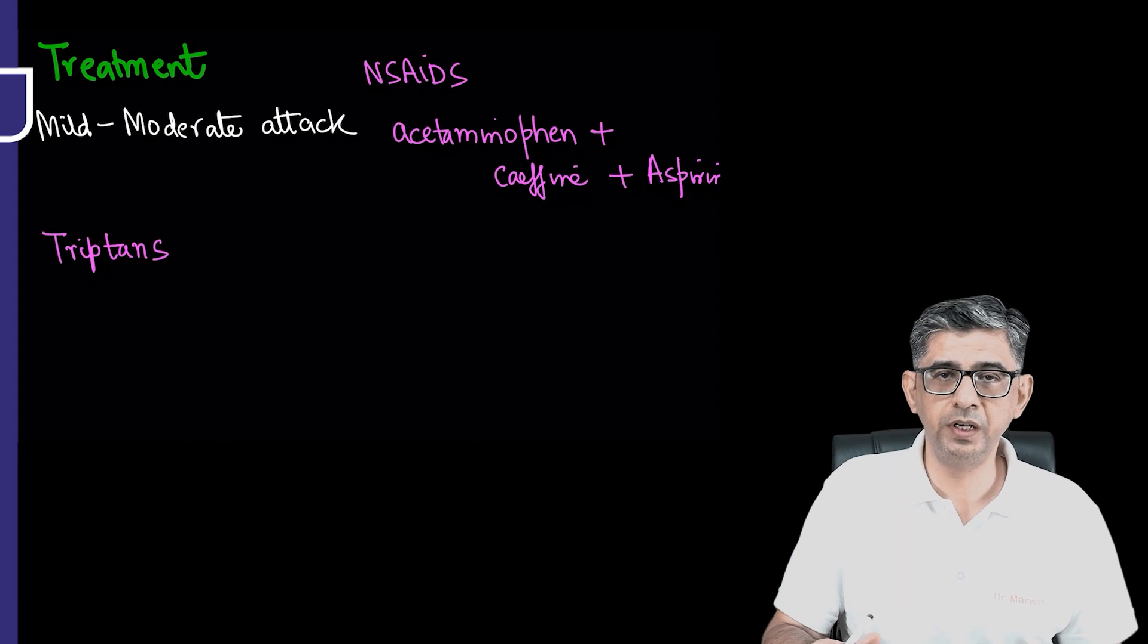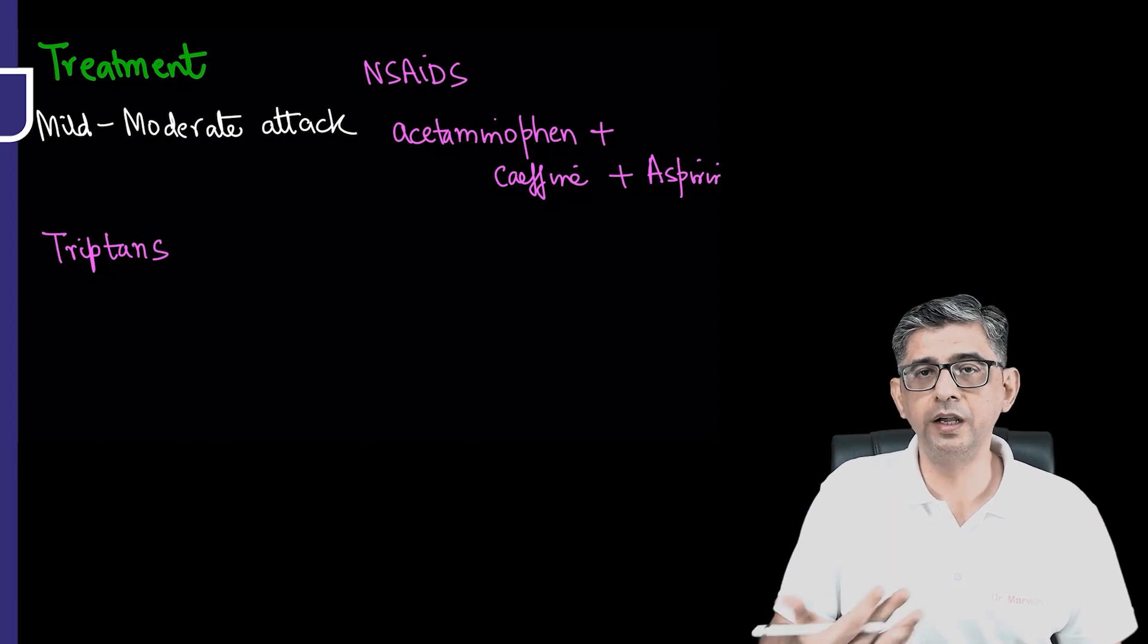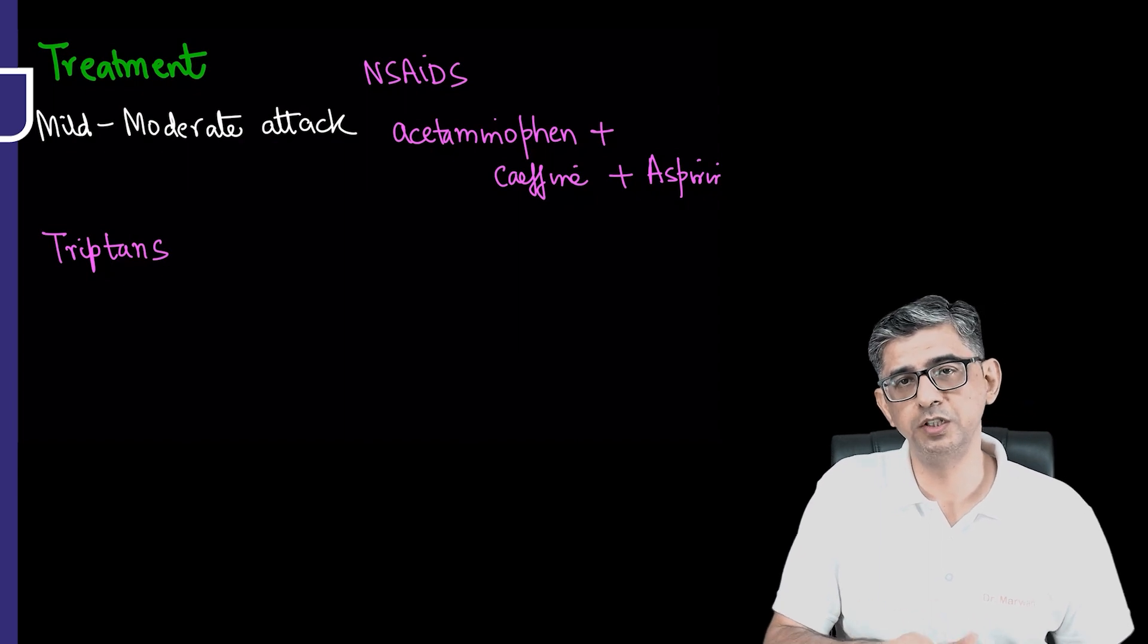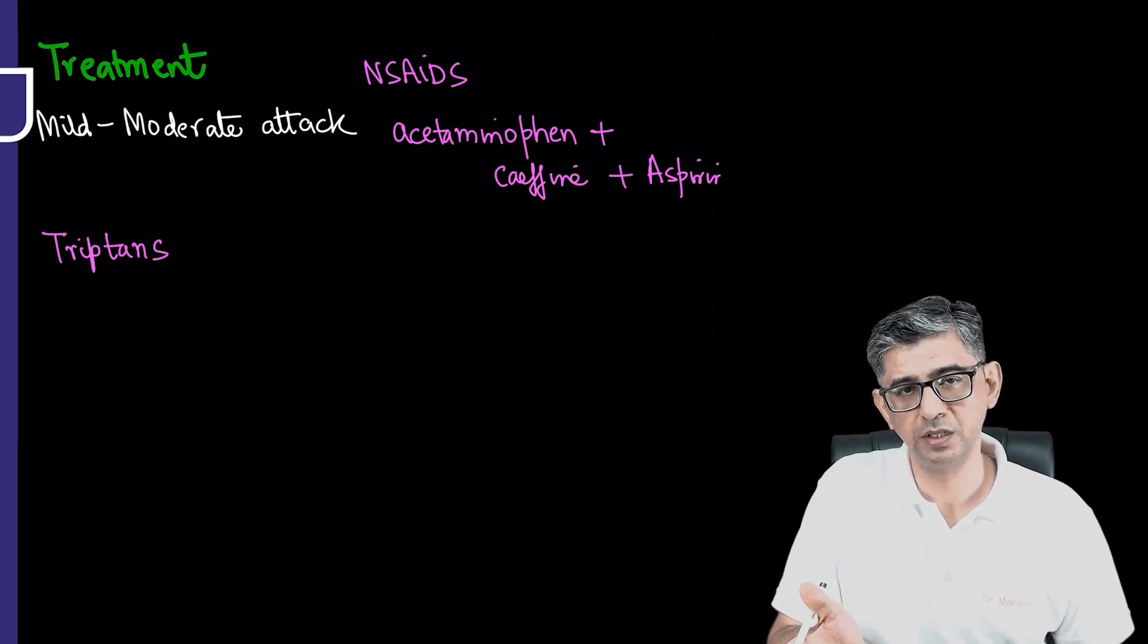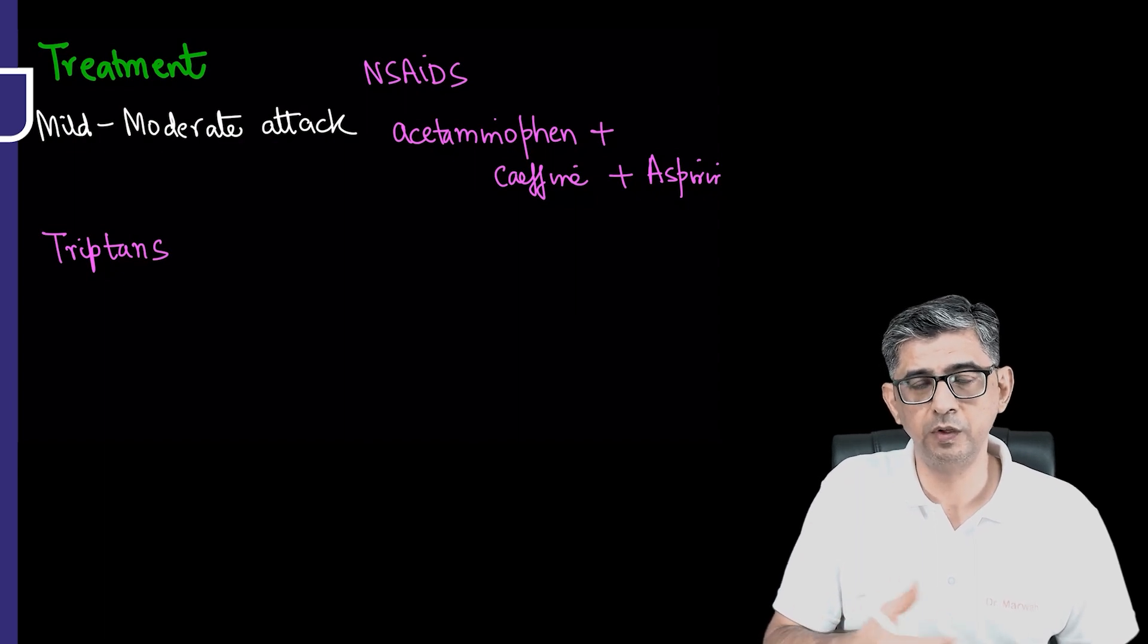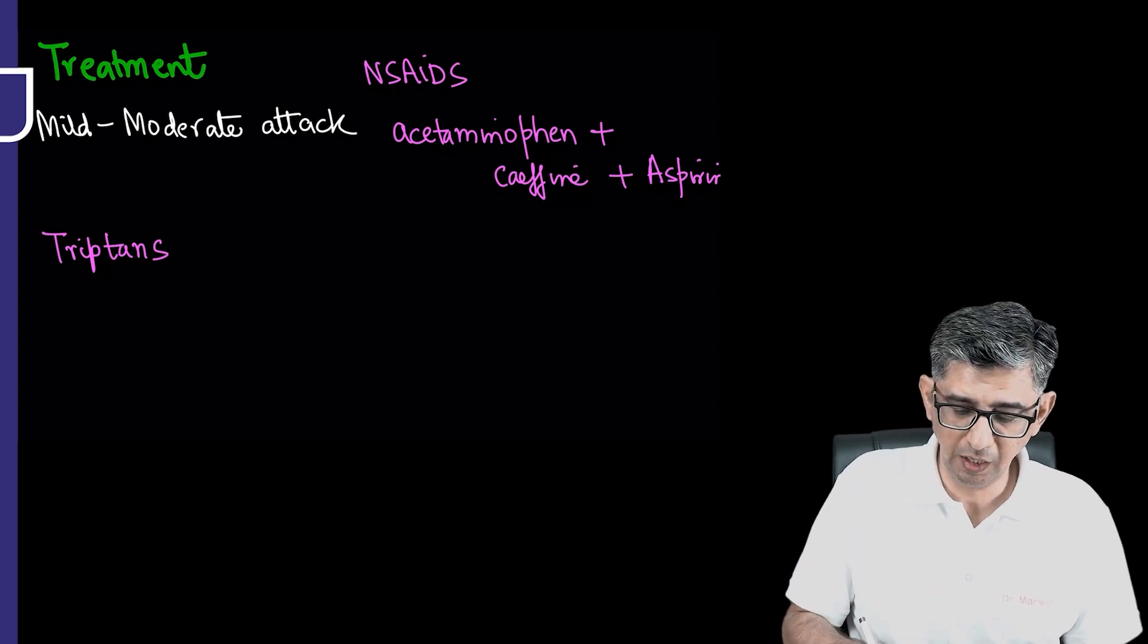If one class of painkiller is not working, that is not an indication for starting a tryptan. You can shift over to an alternative class of medication as well. Tryptans are mainly recommended if there is allodynia in a patient or the person is having severe disability, and here the MCQ can test your pharmacology with respect to which are the most efficacious tryptans.